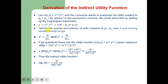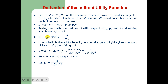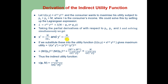If we take partial derivatives with respect to X, Y, and λ and simultaneously solve these three equations, the optimum choice for X1 is M divided by 2PX — that is the Marshallian demand for X. The Marshallian demand for Y is M divided by 2PY. This means that the Marshallian demand is positively related to the consumer's income but negatively related to the good's own price.